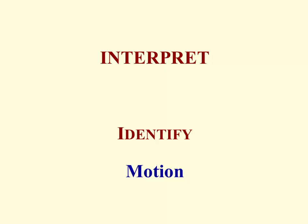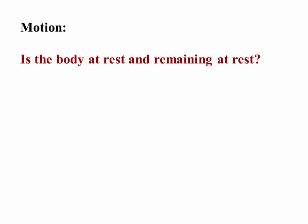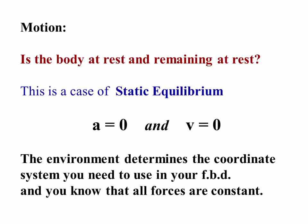Now begins the real attack on the problem. Identify motion that might be in the problem. Is the body at rest and remaining at rest? If so, we have a case of static equilibrium. The acceleration is zero and the velocity is zero. In this case, the environment will determine the coordinate system we need to use. But at least we know all forces are constant from the information given in the problem.